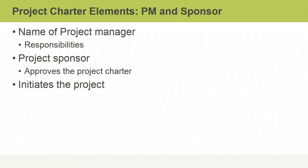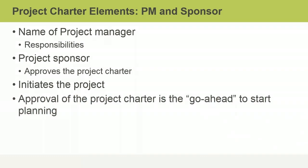Project charter approval formally initiates the project. As the first sanctioned document, it is distributed to key stakeholders, which may include the customer, the management team, and others who might be involved with the project. This marks the beginning of the planning phase. Once approved by the project sponsor, the charter authorizes the project manager to assign resources to the project. It serves as the green light for all subsequent planning processes to begin, including the creation of the project management plan.